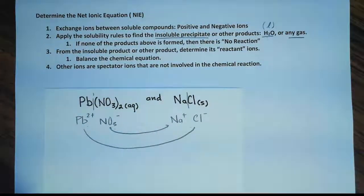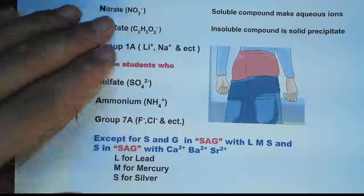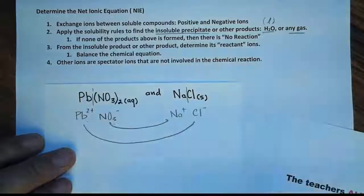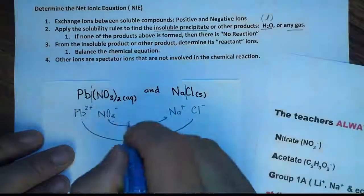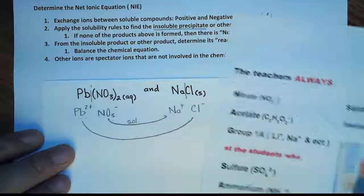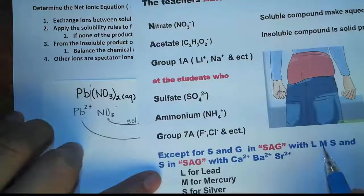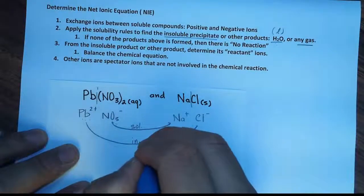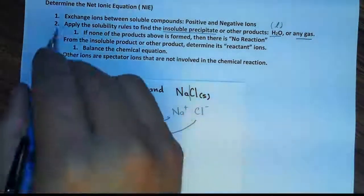In step 2, we look for possible products by applying the solubility rules to determine if a substance will be soluble or will be a solid precipitate. Nitrate is always soluble, so the sodium nitrate product will not form a precipitate. For lead chloride: chloride comes from Group 7 with the exception of LMS — L for lead, M for mercury, S for silver. Since we have lead here, this is an insoluble product. So we have a chemical reaction.